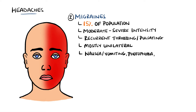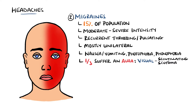Around one in three sufferers also have an aura, which is a progressive focal neurological symptom. For example, the most common is a visual aura that may be the presence of zigzag lines across the visual field, called a scotoma. Others include physical sensation auras such as numbness or tingling, as well as even muscle weakness.